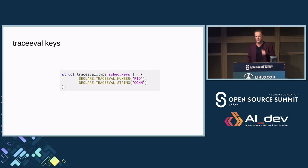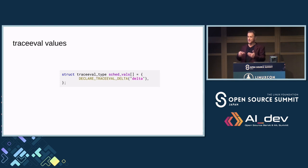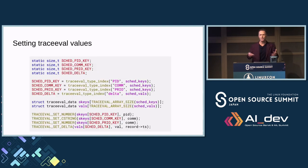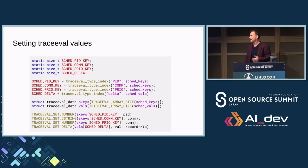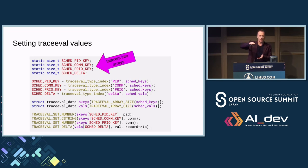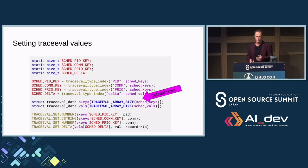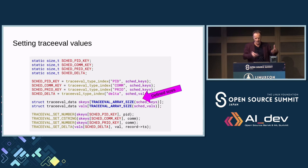For example, I want to track schedule keys — keeping track of process ID and process name (comm). There's a macro to help create these trace_eval_type structures. I have a number for the PID and a string for the comm. For values, I use a trace_eval_delta element. I also added index enums to keep track of array positions so everything is lined up properly. There's a trace_eval_array_size macro — basically the same as the array_size macro in the kernel but with a unique name.